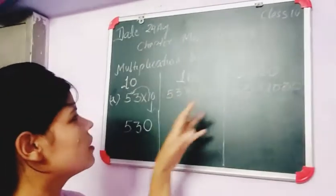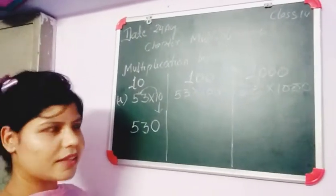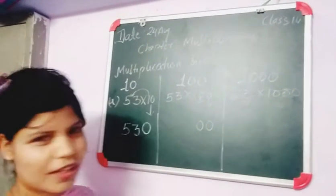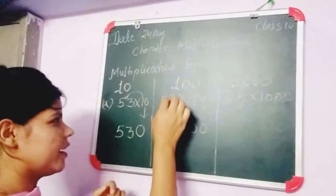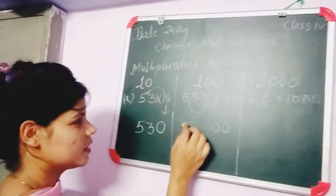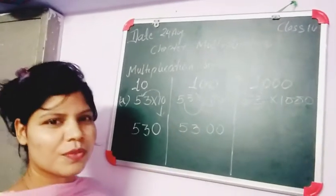Second number is multiplied by 100. Then, how many zeros are here? There are 2 zeros. And after that, you multiply this number by 1. Then, 53 times 1 is 53.